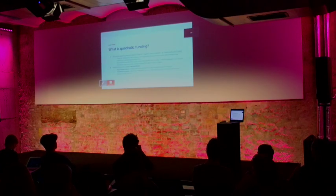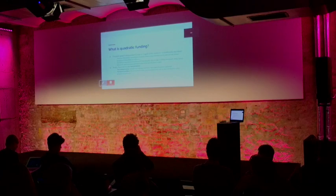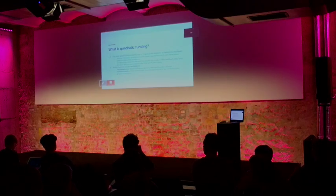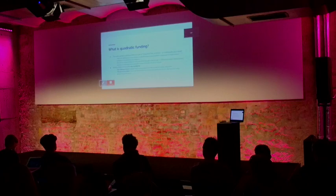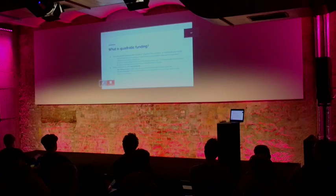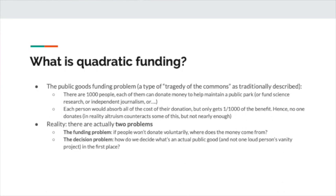So what I wanted to talk about here is kind of start off with a general overview of what quadratic funding — also known as quadratic matching, also known as liberal radicalism — is, what this mechanism does, and what the purpose of this mechanism is.